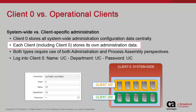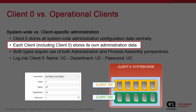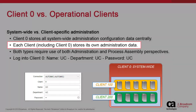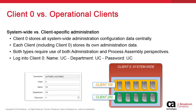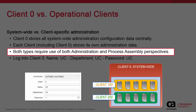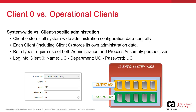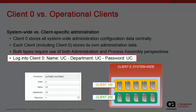Administration is required at the level of each operational client and in client 0. As such, the administration and process assembly perspectives show different types of data based on whether we're in client 0 or another. To log into client 0, we use UC for all authentication fields.